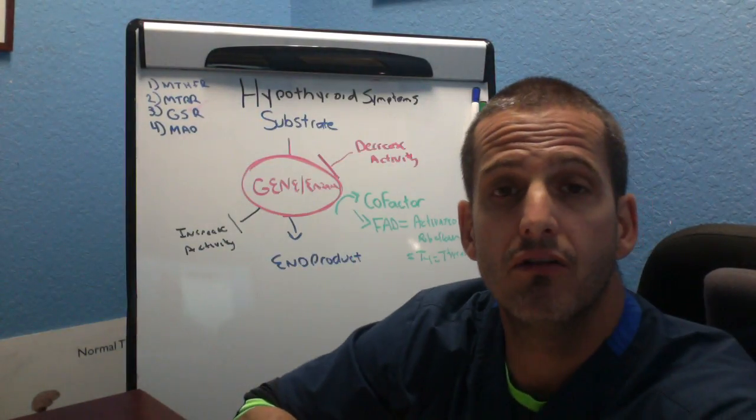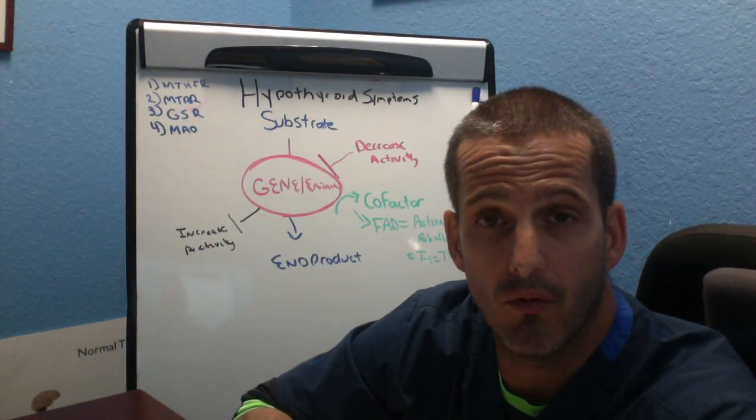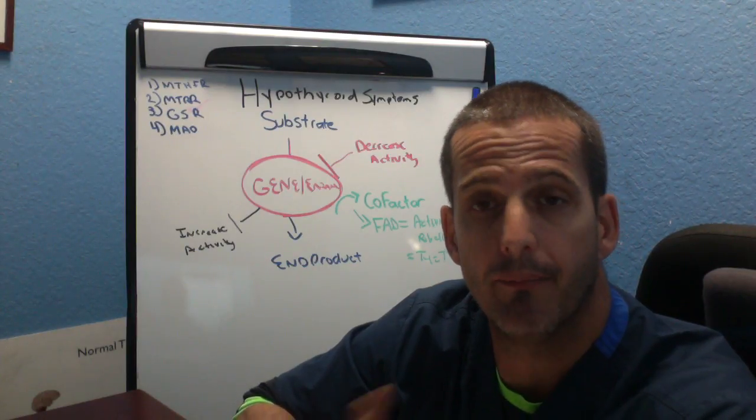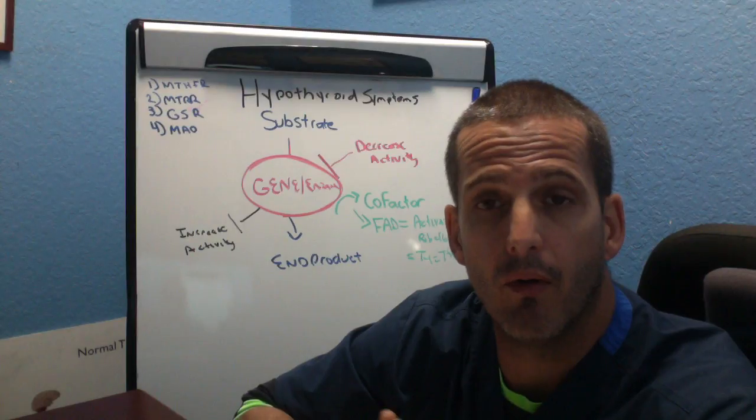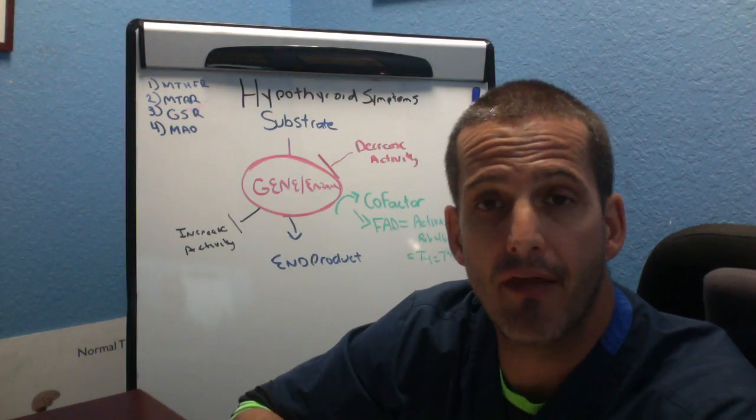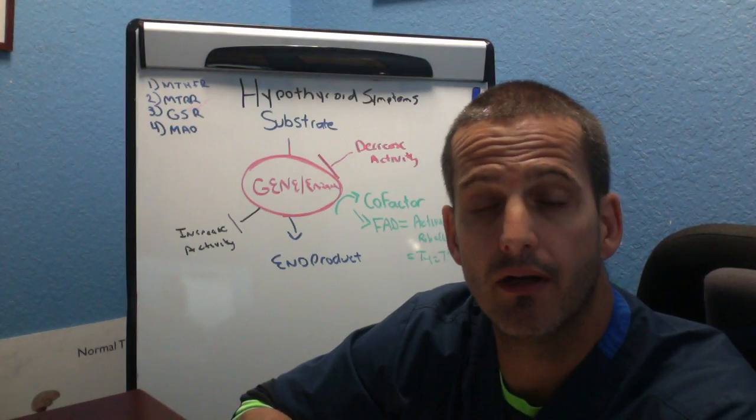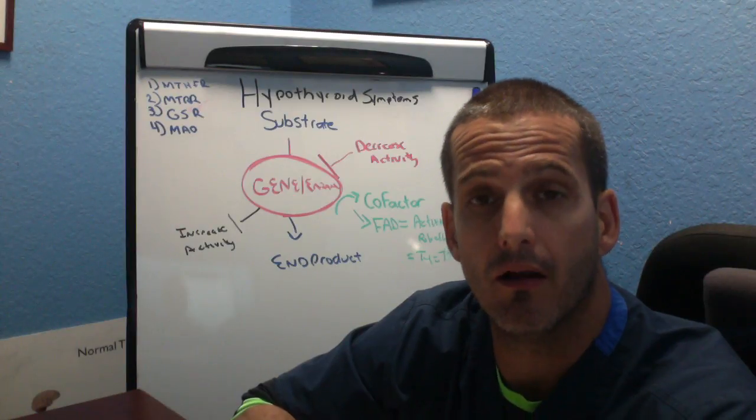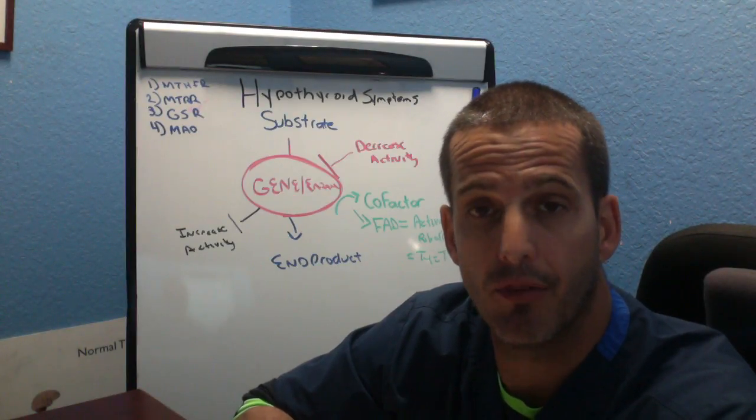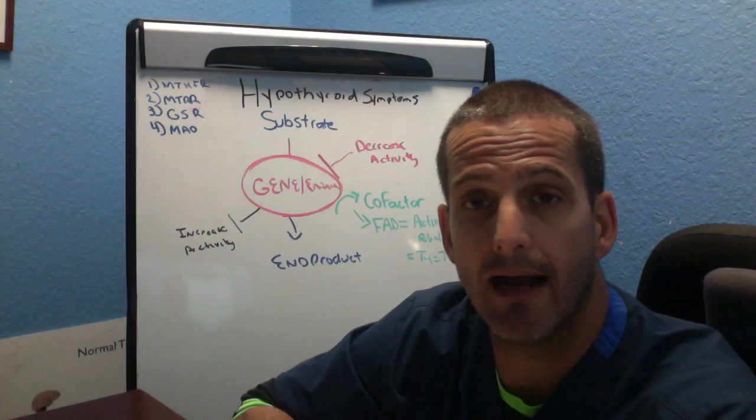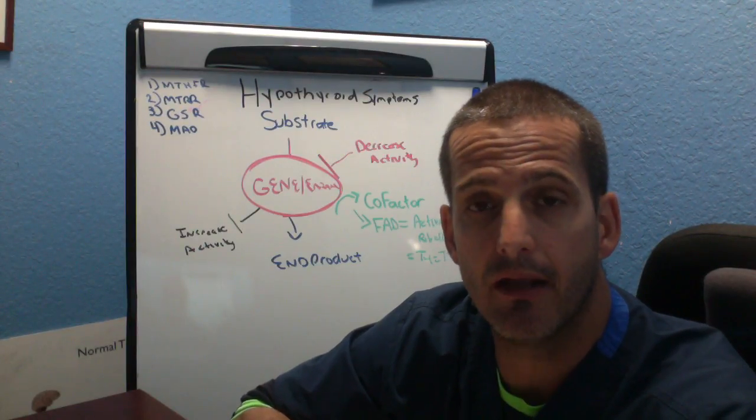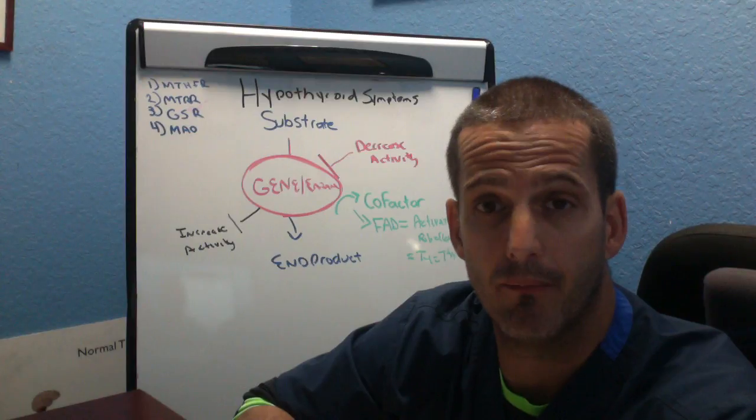MTRR also requires activated riboflavin based on good thyroid function. So MTRR helps methylate B12. So you could have a B12 problem on top of the fact that you have a hypothyroid problem, on top of the fact that you're not able to activate riboflavin, making your MTRR even that much more slow.